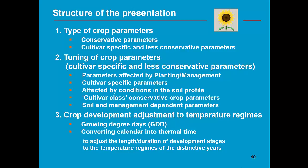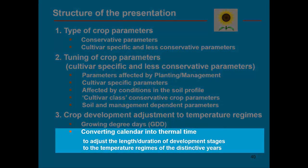The idea of switching from calendar time to thermal time is to adjust the length and duration of development stages to the temperature regimes of the distinctive years. If you plant in another year or on another day, the temperature regime during the crop cycle will be different, and as such the length and duration of the development stages will be different as well.